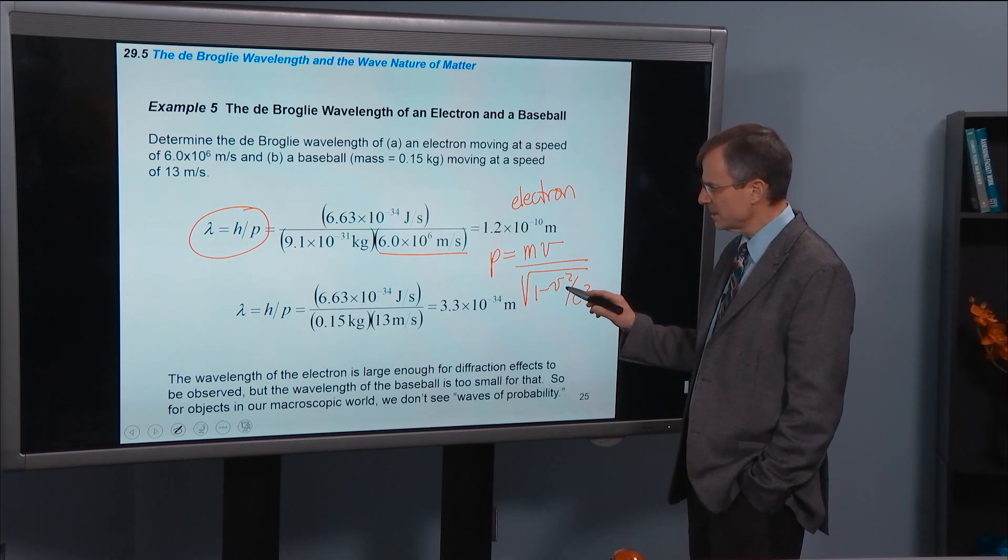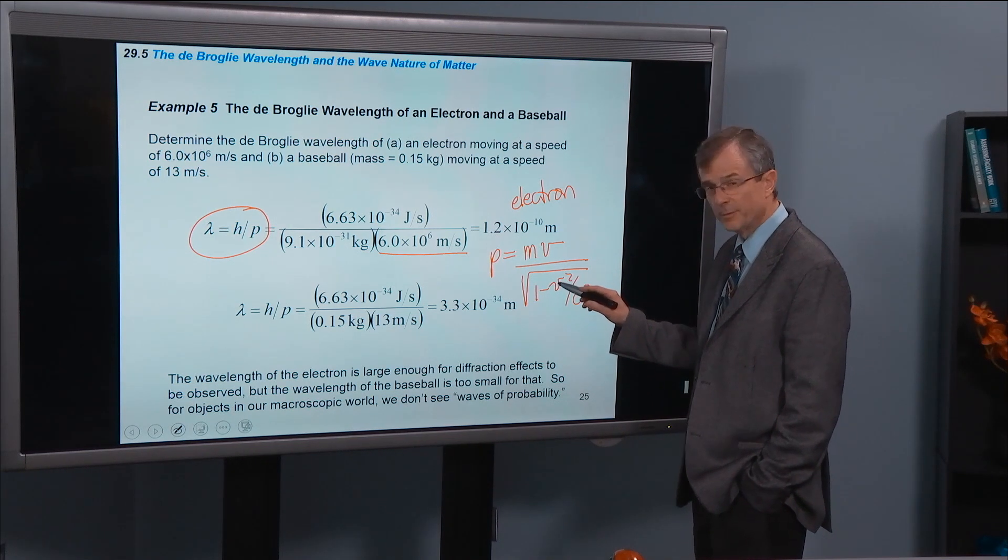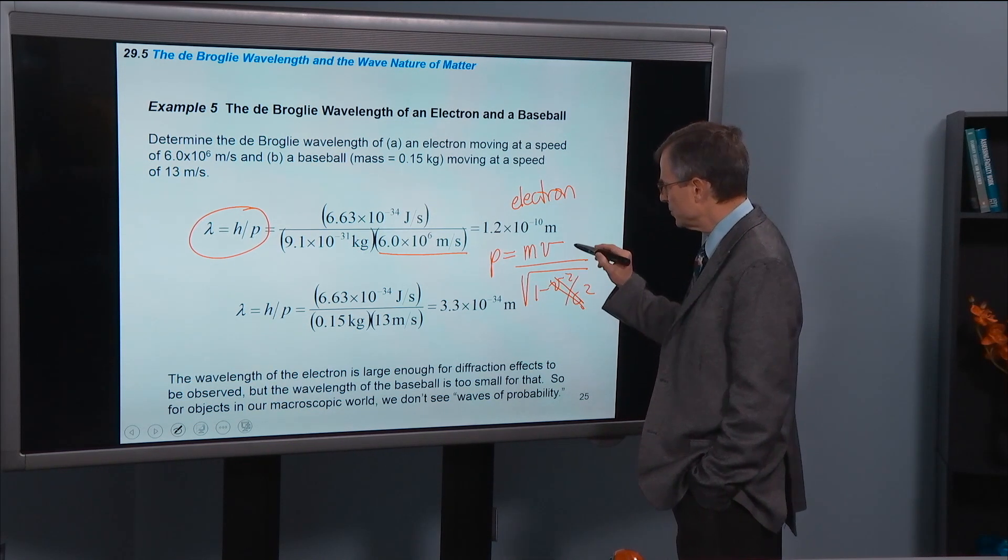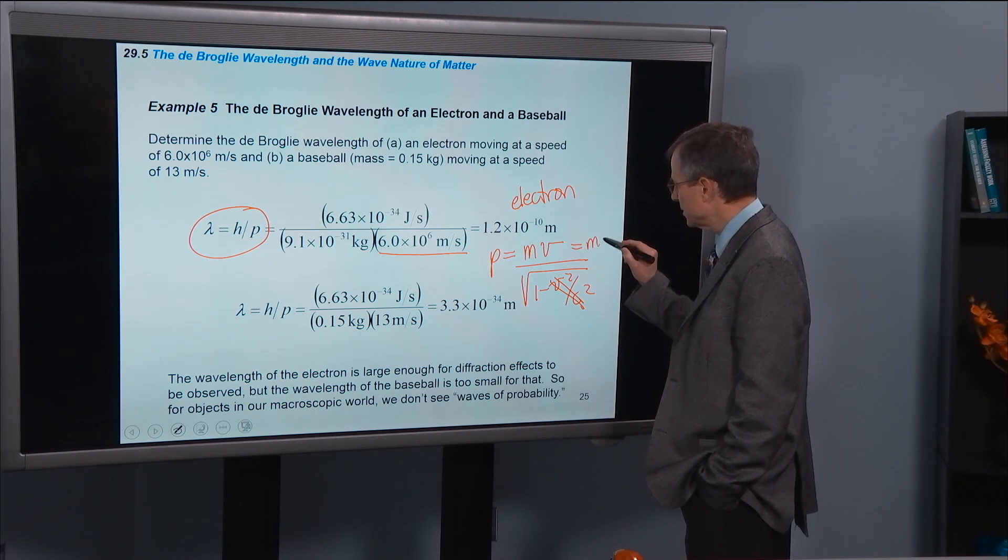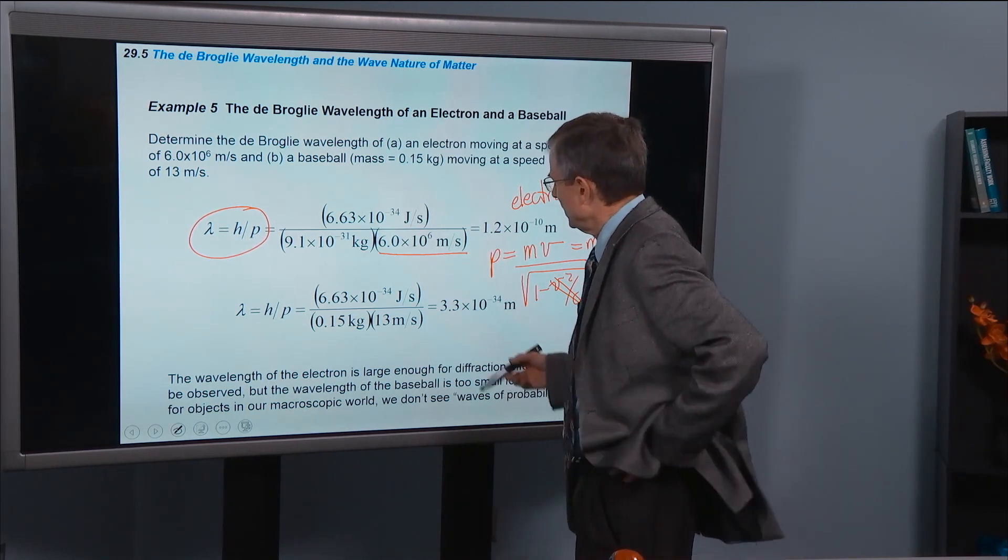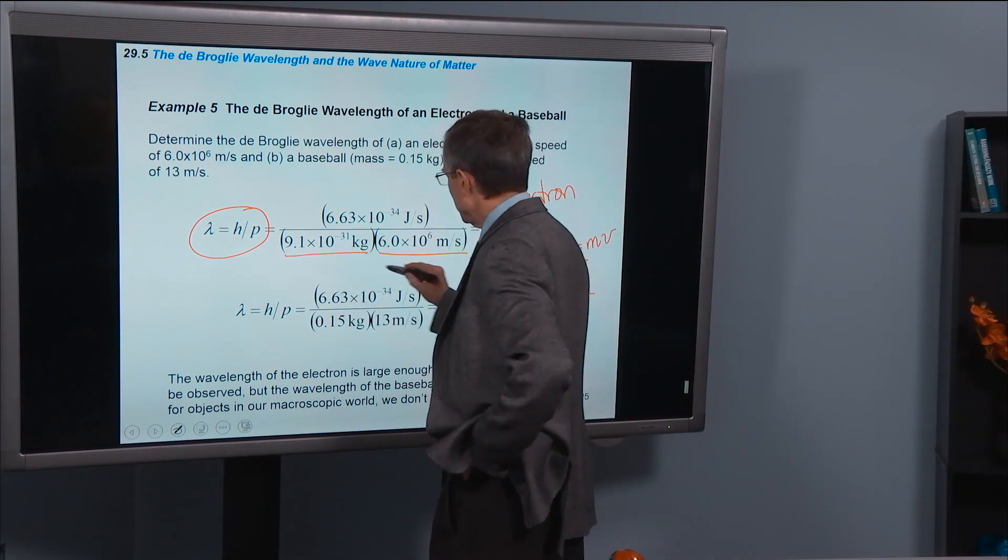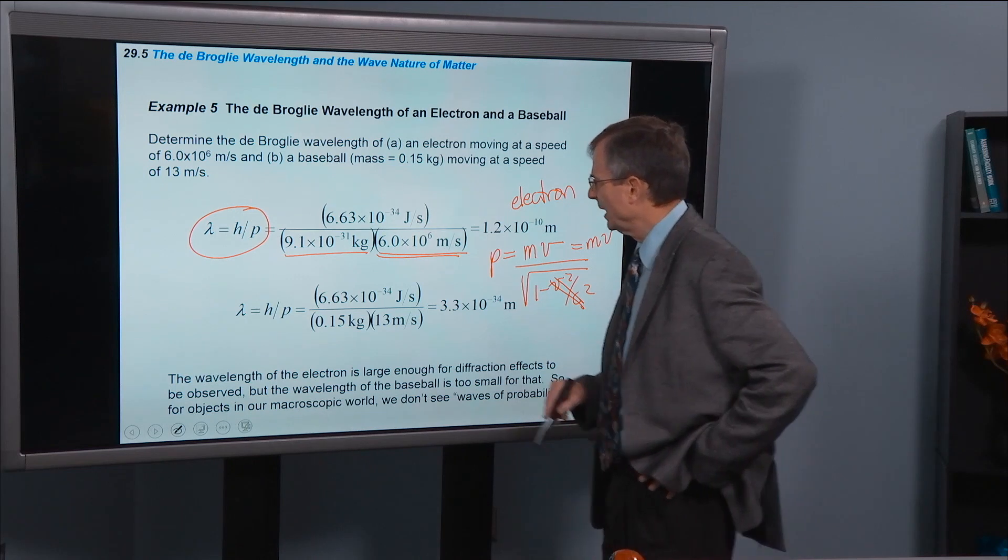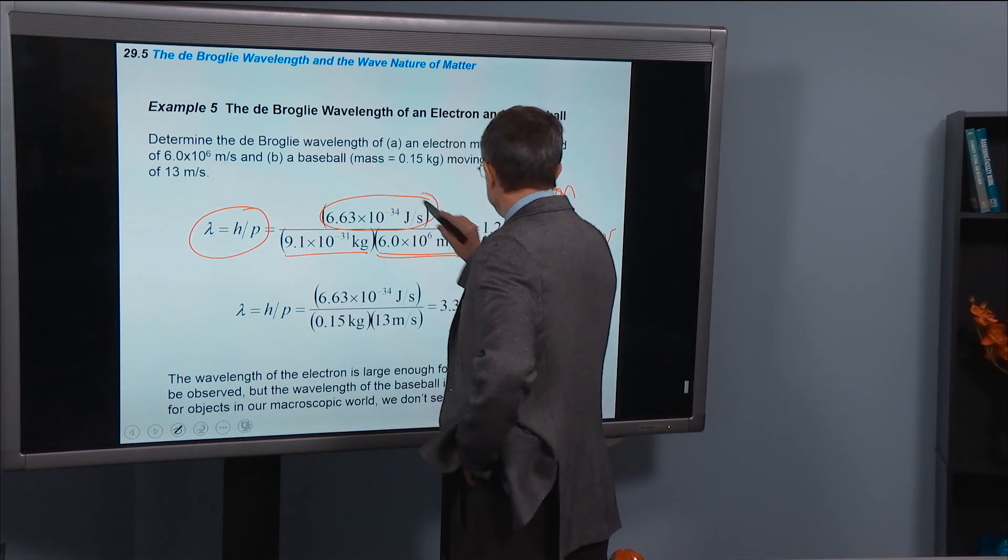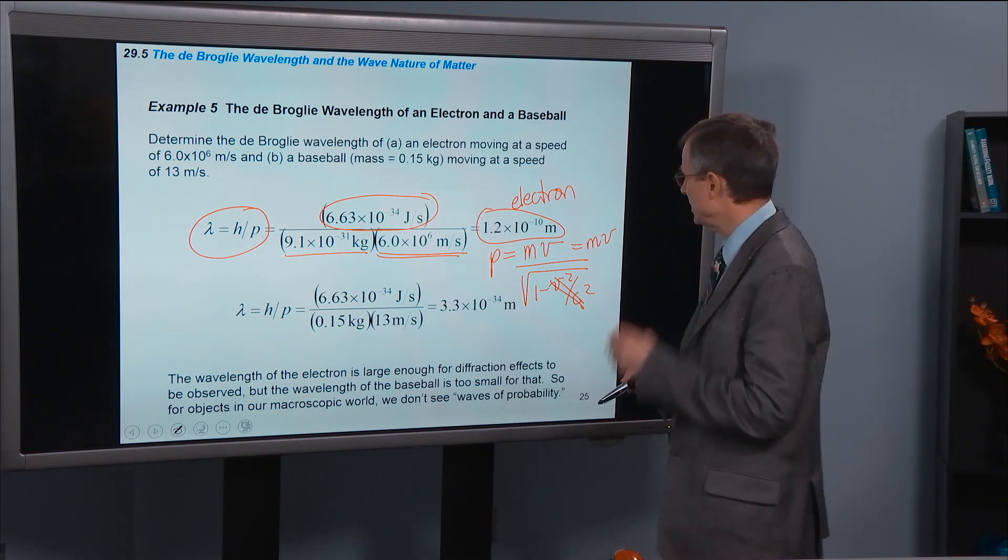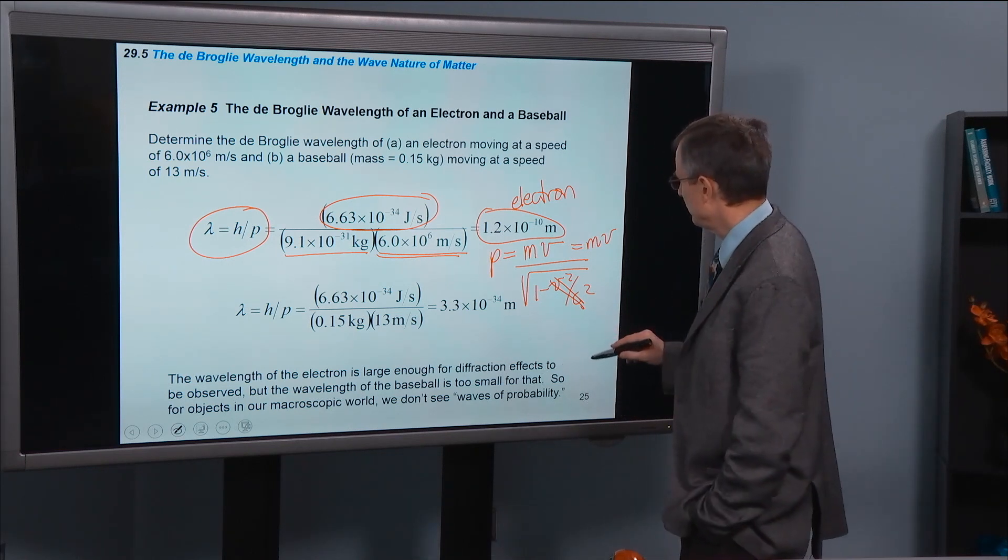We're talking about 10 to the 6 meters per second here for V. C is 10 to the 8. So when you square that, this correction becomes small and you get the square root of 1, which is 1. So it's approximately equal just to the classical momentum. So here's M, the mass of the electron. Here's the speed of the electron V. Here's Planck's constant. And we end up with an electron wavelength of about 1 times 10 to the negative 10 meters.